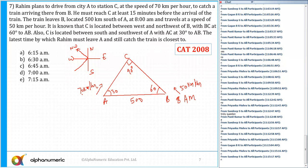The latest time by which Rahim must leave A and still catch the train is what we need to find. The distance AB is 500, so can you use the property of 30-60-90 triangle to find out these two sides?